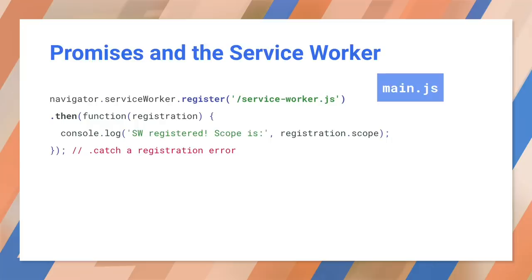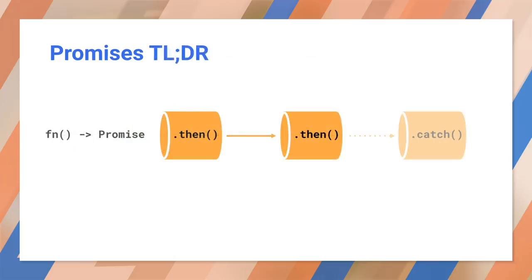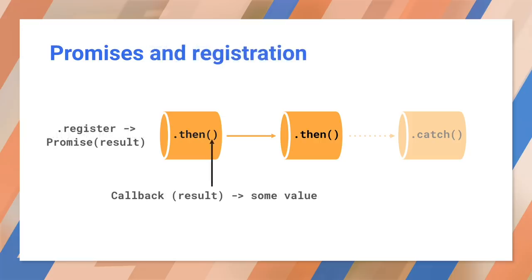Let's take a step back and look at how service workers use promises, beginning with registration. Notice the use of .then. Registration happens in the background, returning a promise. Calling then on the promise sets up the next action to run after the registration succeeds. Promises act like a pipeline. Once a function creates a promise, you can call then to register the next action. The outcome of the promise will be passed into this function. The output of that function is either a promise or a value, and if it's a value, it will be wrapped in a promise of its own. This lets you chain actions together, building a pipeline of functions that successively transform the result.